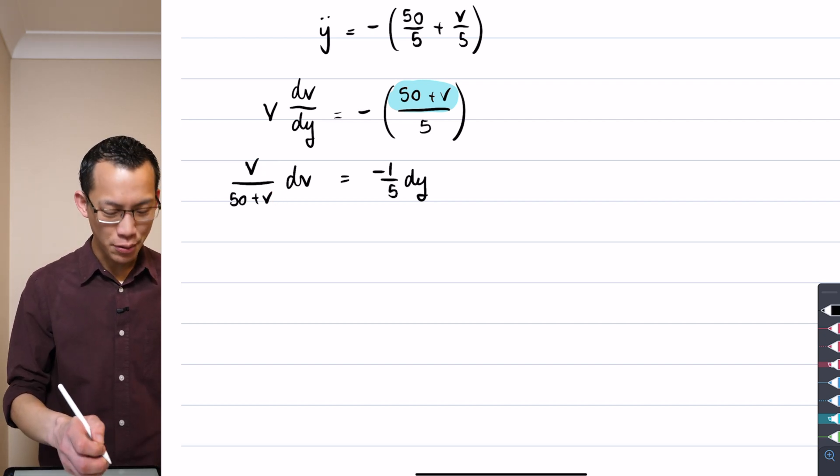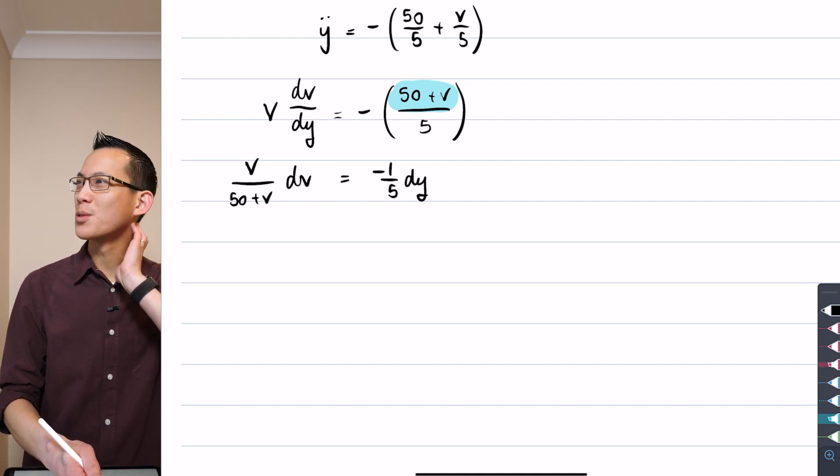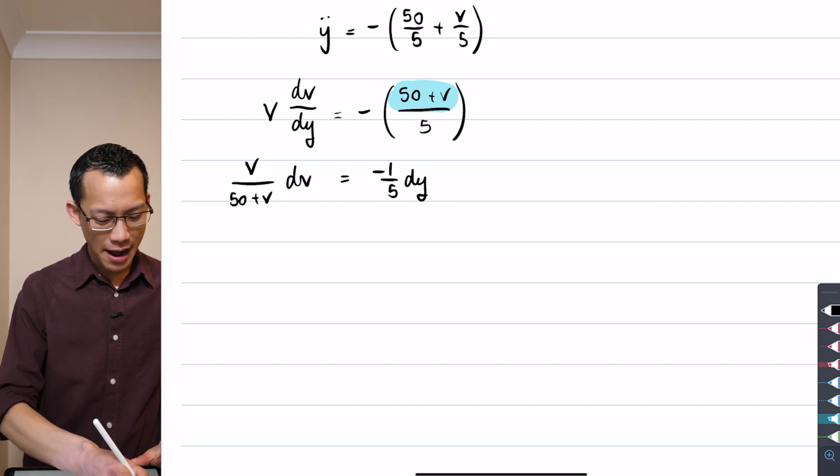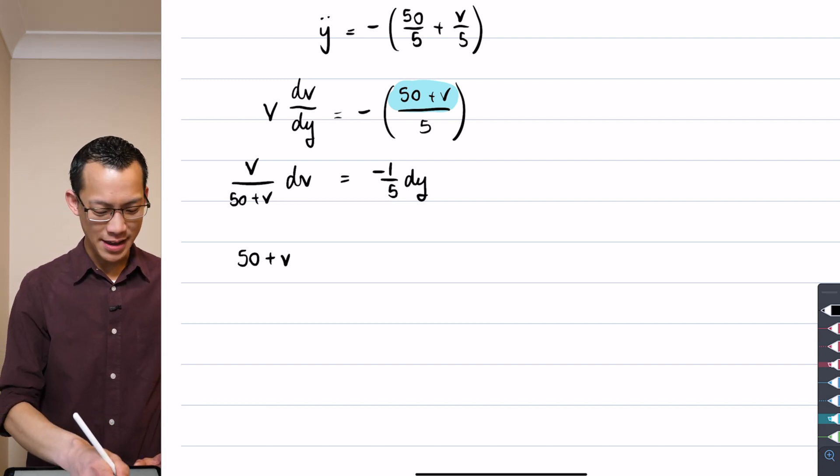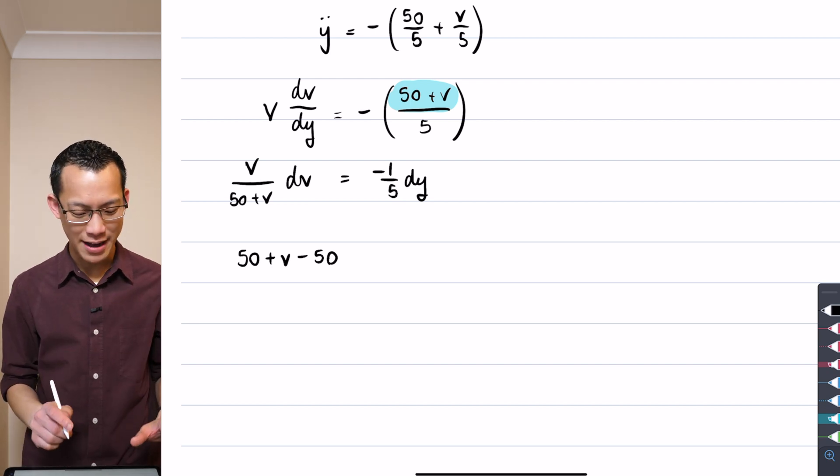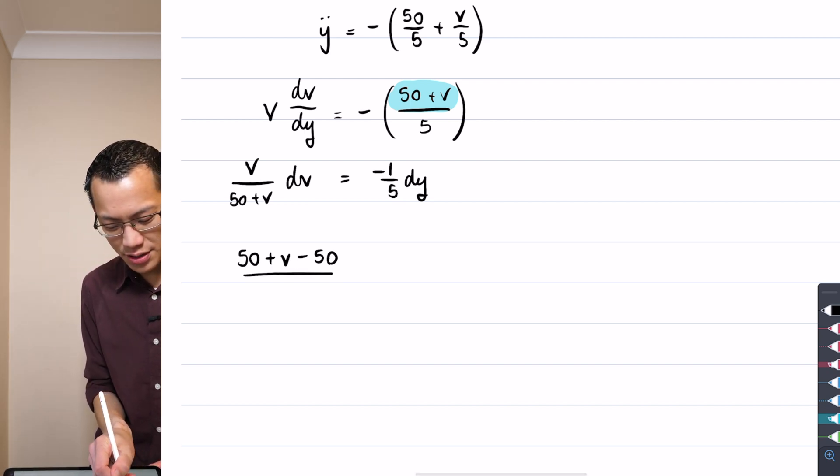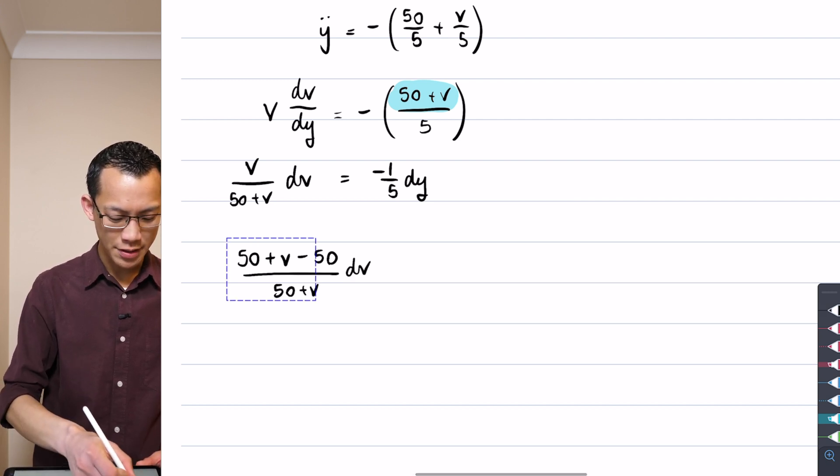So, in order to do that, I'm going to pull a trick we've done before dealing with integrals with rational integrands. I'm going to manipulate this numerator in just a teeny tiny way by putting a 50 up the top there. You can't just add 50 because you want to. You're going to have to subtract 50 to keep it all balanced. And all of that is still on the same denominator. 50 plus v and then there's a dv over there.